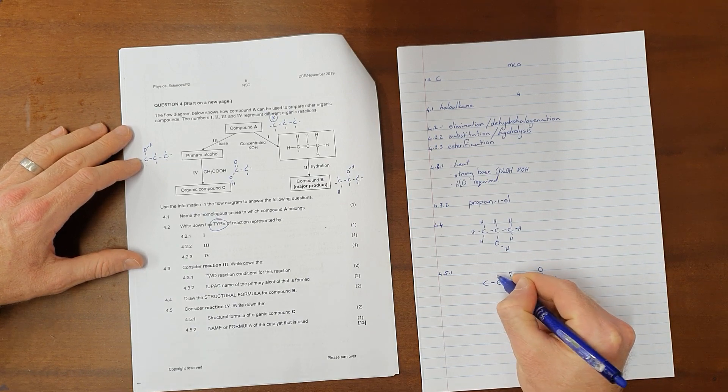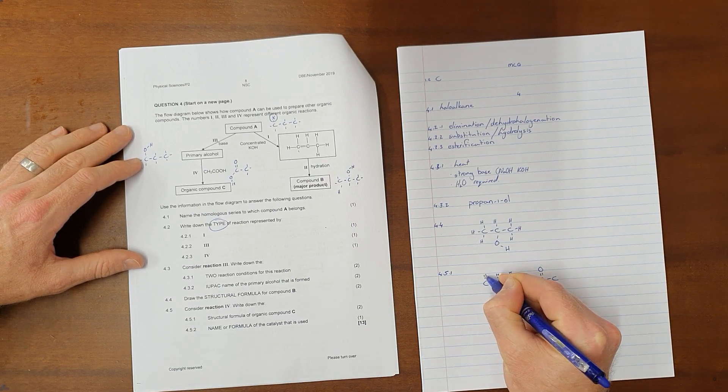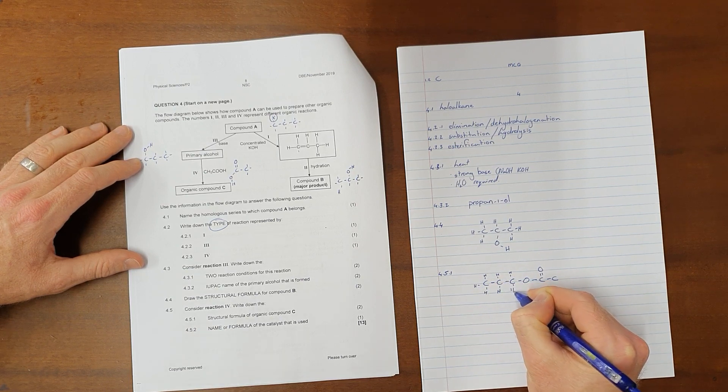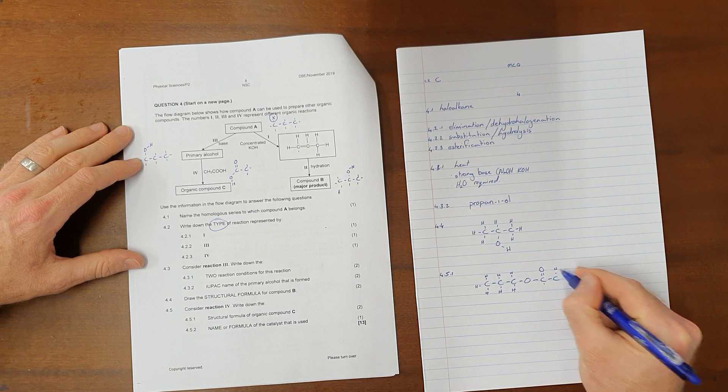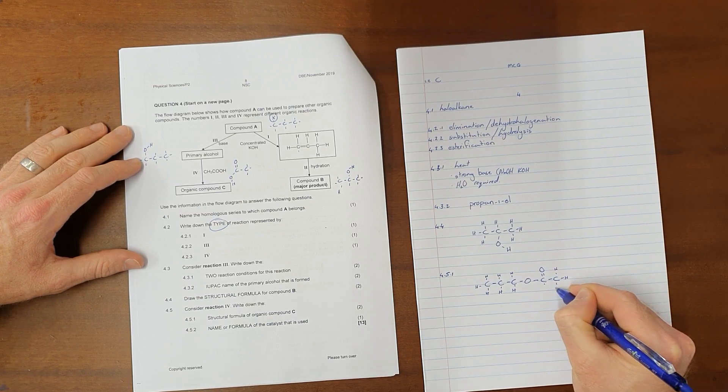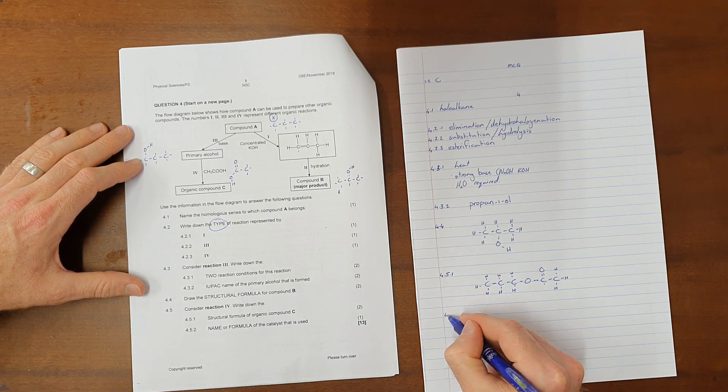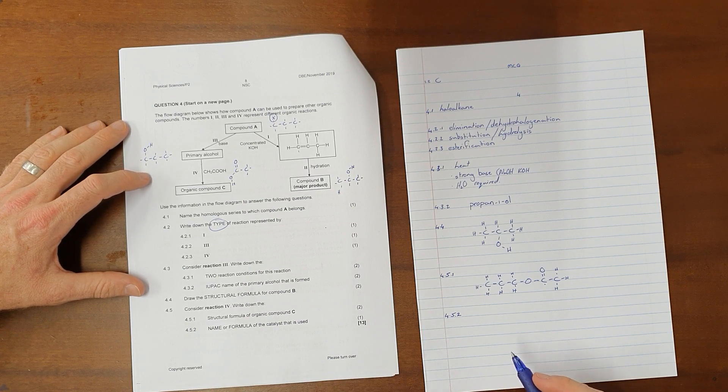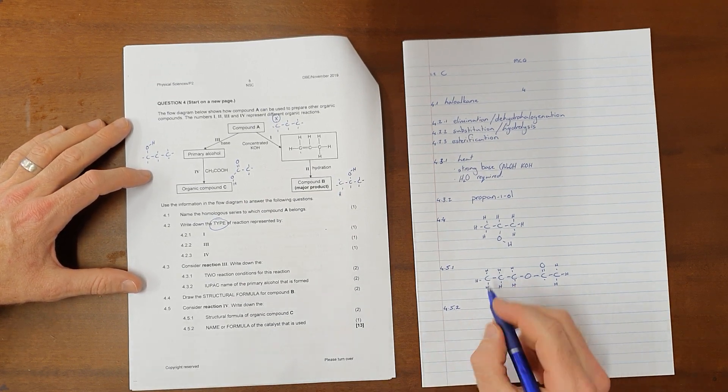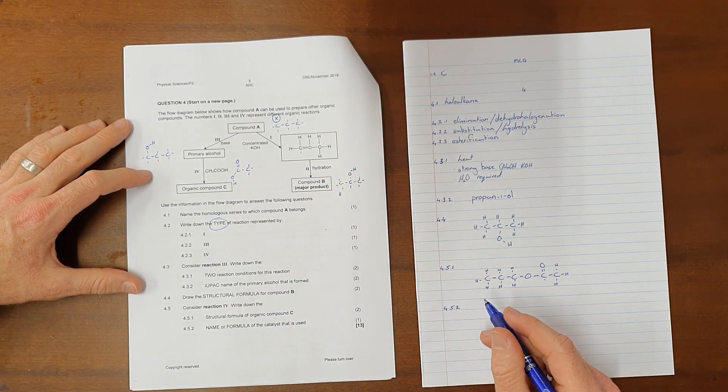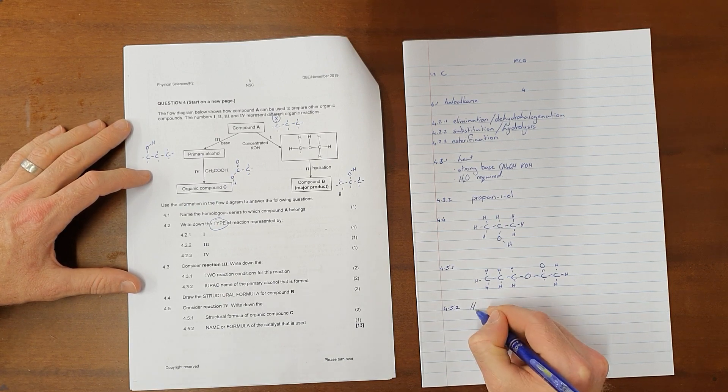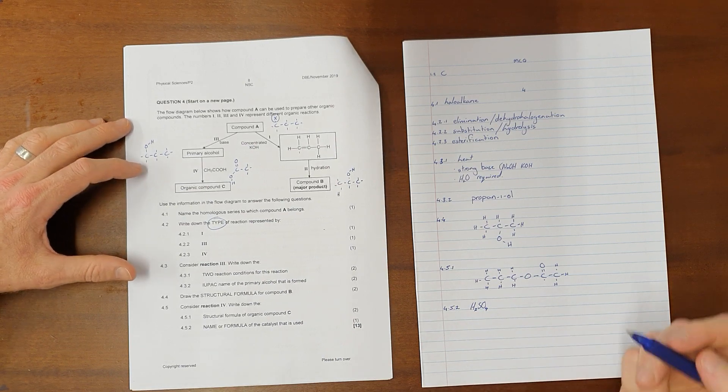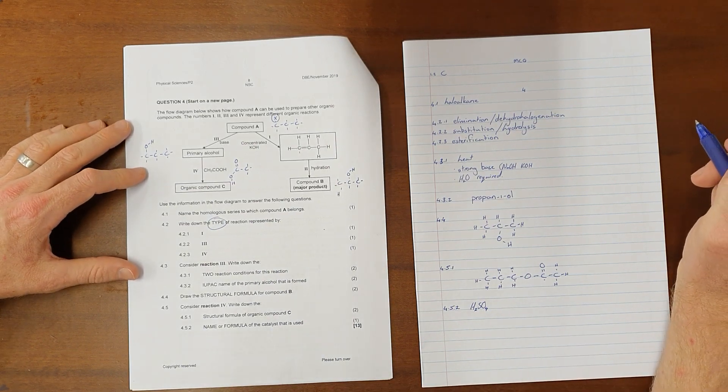And then, question 4.5.2 asks, The name or the formula of the catalyst that is used, and we know that the catalyst that is always used in an esterification reaction is sulfuric acid. They have asked for either the name or the formula, so either H2SO4 or sulfuric acid would be accepted here.